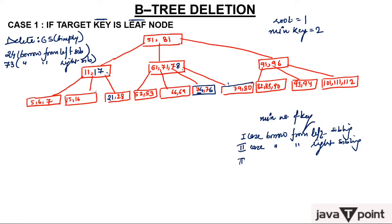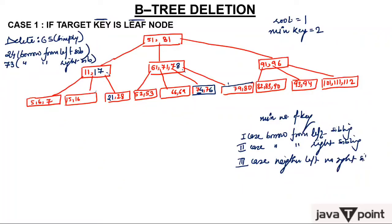Now the third case: when a key is being deleted and neither the left nor the right sibling has more than the minimum number of keys — that is, neither sibling can spare an element. This arises when we need to delete 66. Neither the left nor the right sibling has more than 2 keys.